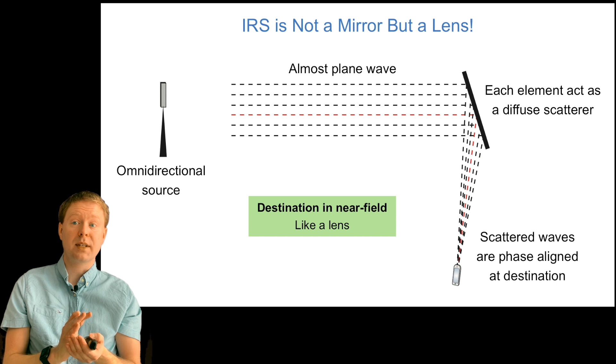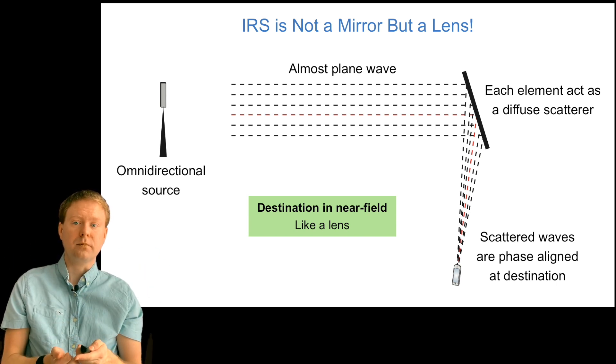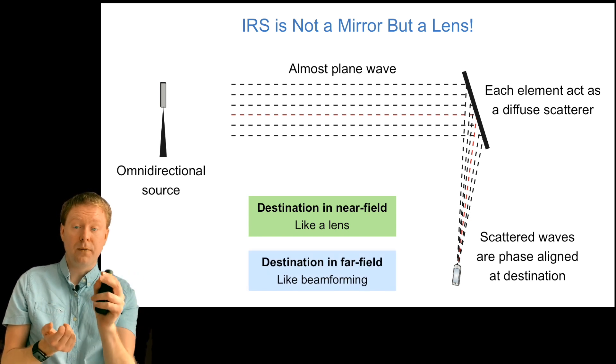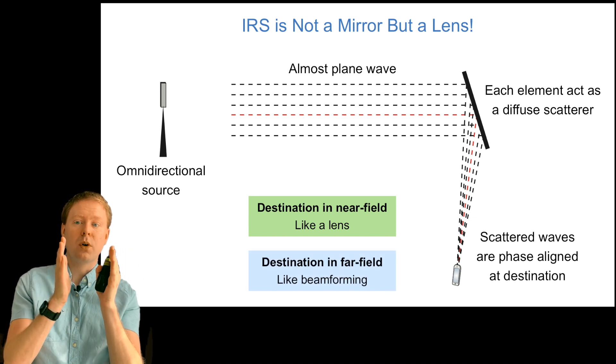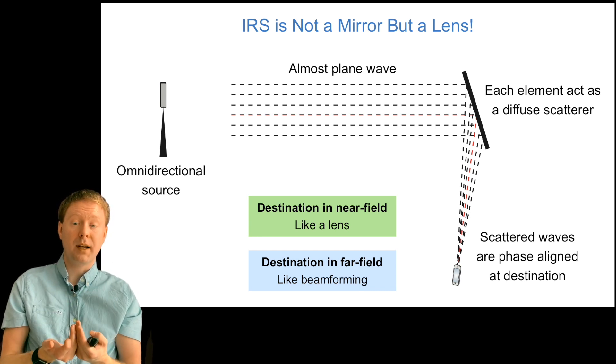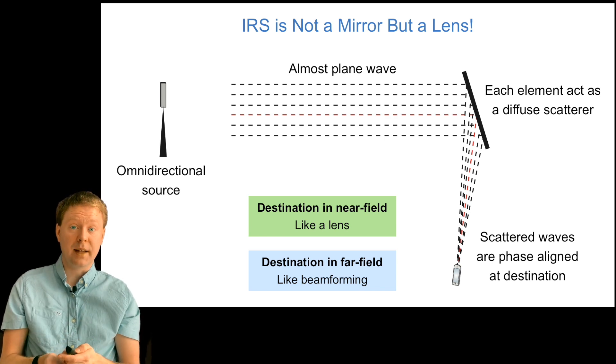If we then move this destination into the far field, the signal will be more and more focused towards the user with beamforming-like behaviors. But it's still a lens array that we are creating here.